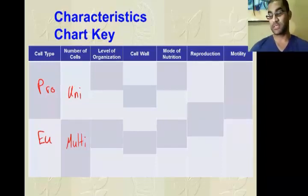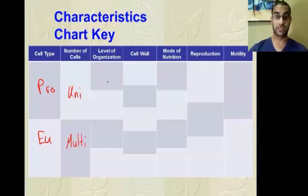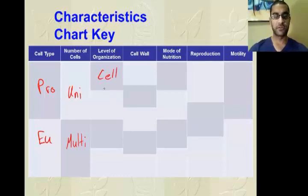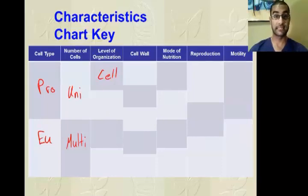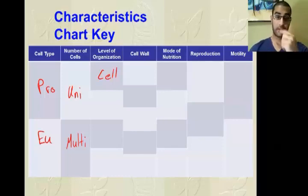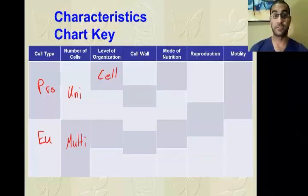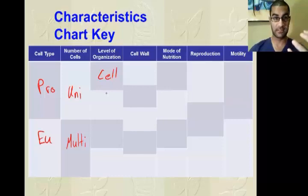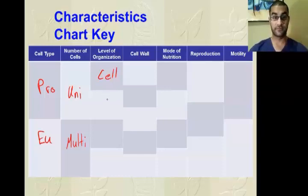Levels of organization: we start with the smallest basic unit of life, which is the cell. There are things smaller than a cell — organelles, atoms, protons, neutrons, quarks — but in biology we start at the cell because that's the smallest thing with all the characteristics of life. If I'm referring to a unicellular organism, the only level of organization is the cell itself — there's no way to get to the tissue level.